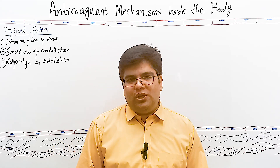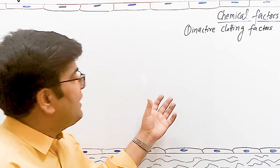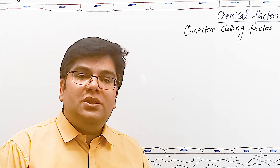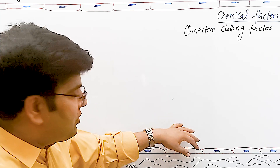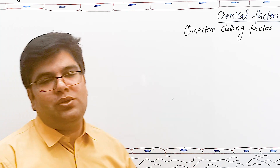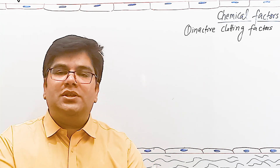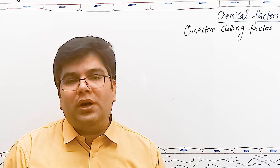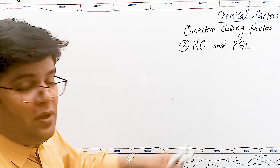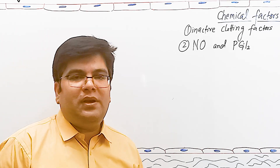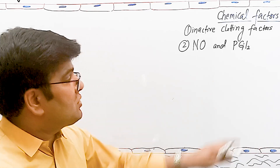Now let's talk about chemical factors which play their role in natural anticoagulation. Most clotting factors in our blood are proteins and normally they are inactive — they are not activated unless there is trauma to the endothelium, vessel wall, or tissues. So normally, inactive clotting factors do not allow clotting to occur.